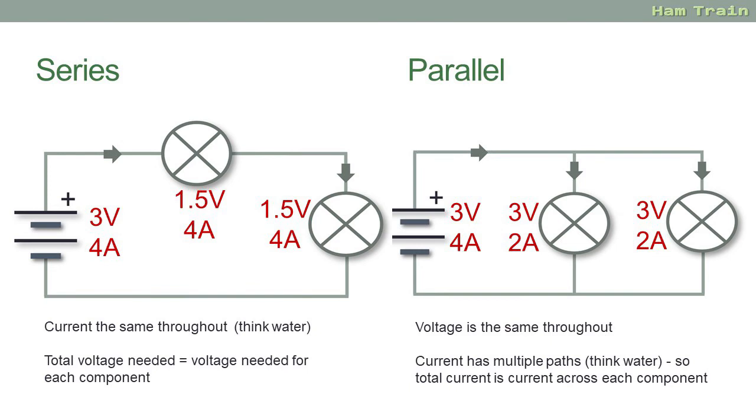Just to close though, I'll put these series and parallel circuits next to each other. So on the left we have the series circuit. Assuming here a 3 volt battery and 4 amps for the circuit. Through the first lamp the voltage is halved and the current remains the same. It goes to the second lamp, again voltage half, current stays the same. Think of it like water, there's only one path, so the current will be constant. And the total voltage needed for the circuit is the voltage needed for each component. In this case, 1.5 plus 1.5 equals 3. On the right a parallel circuit, and here the voltage is the same throughout. Like water, the current has multiple paths, so the total current is the current that's flowing across each of the components. In this example, a 3 volt battery. 3 volts going through each of the lamps. Total current for the circuit is 4 amps. And that's 2 amps through the first lamp and 2 amps through the second lamp. Both of these diagrams of course assume that both lamps are identical.